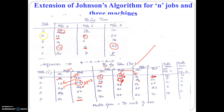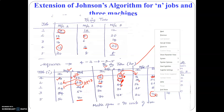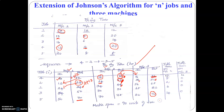Job 2 is being processed in machine 3 for 20 minutes, so 36 plus 20 is 56. Machine 3 is available at the end of the 56th minute, and the next job is free at the end of the 44th minute, so the maximum of these two is 56. The same way we compute for the remaining jobs. At the end of the 90th minute, all five jobs have been processed.